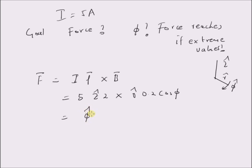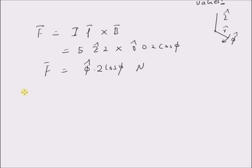This is phi cap into 5 times 2 times 0.2, which is equal to 2 cos phi. So the force vector is given by phi cap into 2 cos phi newtons.